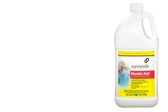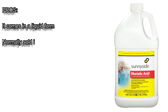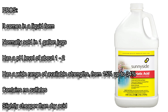Some pros: it comes in a liquid form, normally sold in one-gallon jugs for pools. It has a pH level of about 1 to 2, and a wide range of available strengths from 15% up to 34%. It contains no sulfates, and it's slightly cheaper than dry acid.